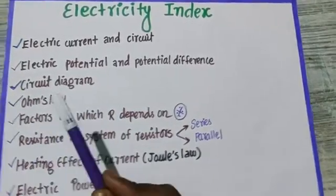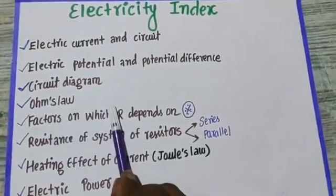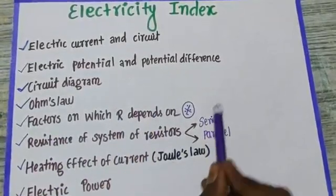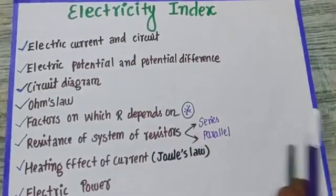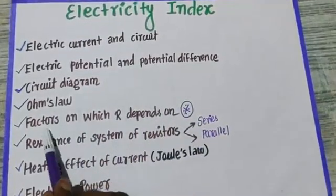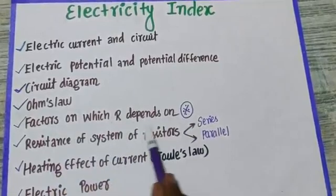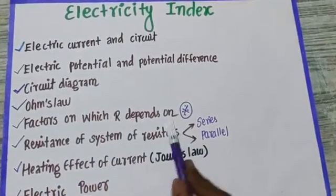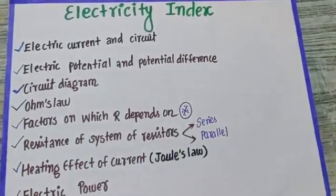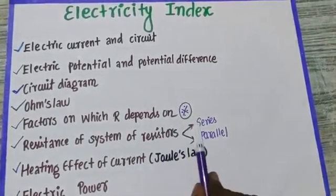That is Ohm's law, one of the very important laws and it is also very easy. Ohm's law is the potential difference or voltage that is directly proportional to current. V is directly proportional to current. That is the factors on which resistance depends upon.